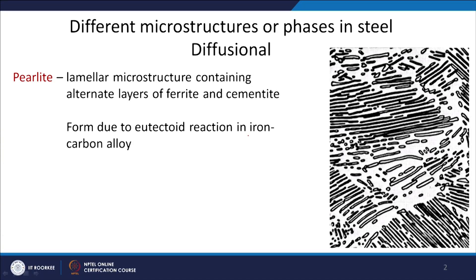One of them we have already seen is pearlite, which is a lamellar microstructure containing alternate layers of ferrite and cementite, forming due to the eutectoid reaction in iron-carbon alloys — from austenite to a region where you get ferrite and cementite forming next to each other. They form next to each other because that is how they can transport atoms between the two phases depending on their composition, which is the easiest way to do that. The first is pearlite; a couple of new phases are also diffusional, with some debate.